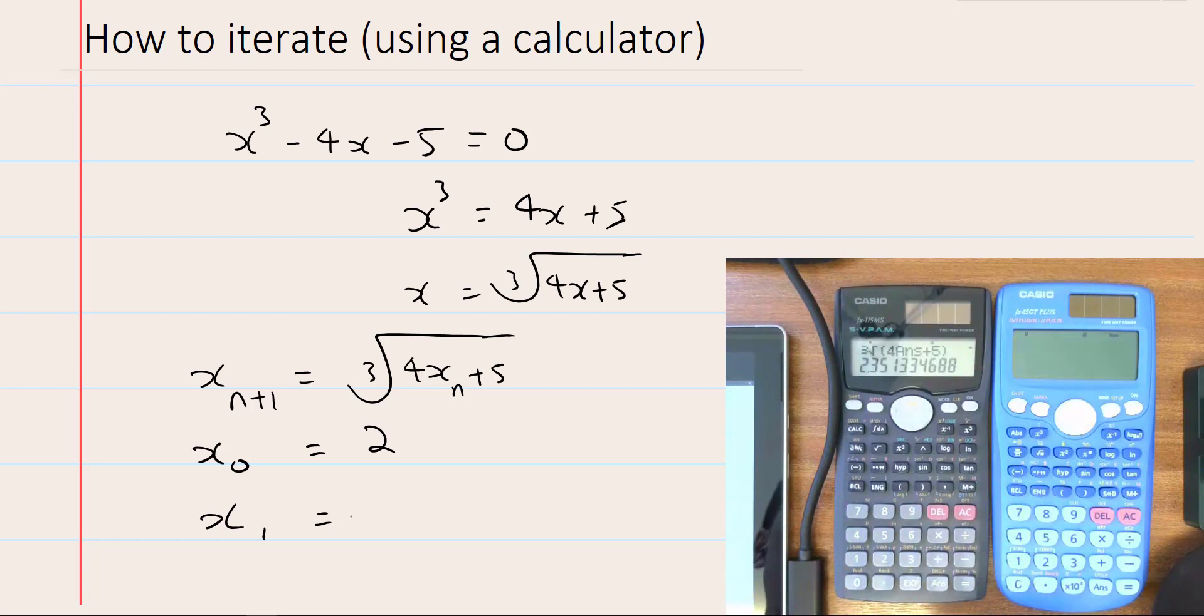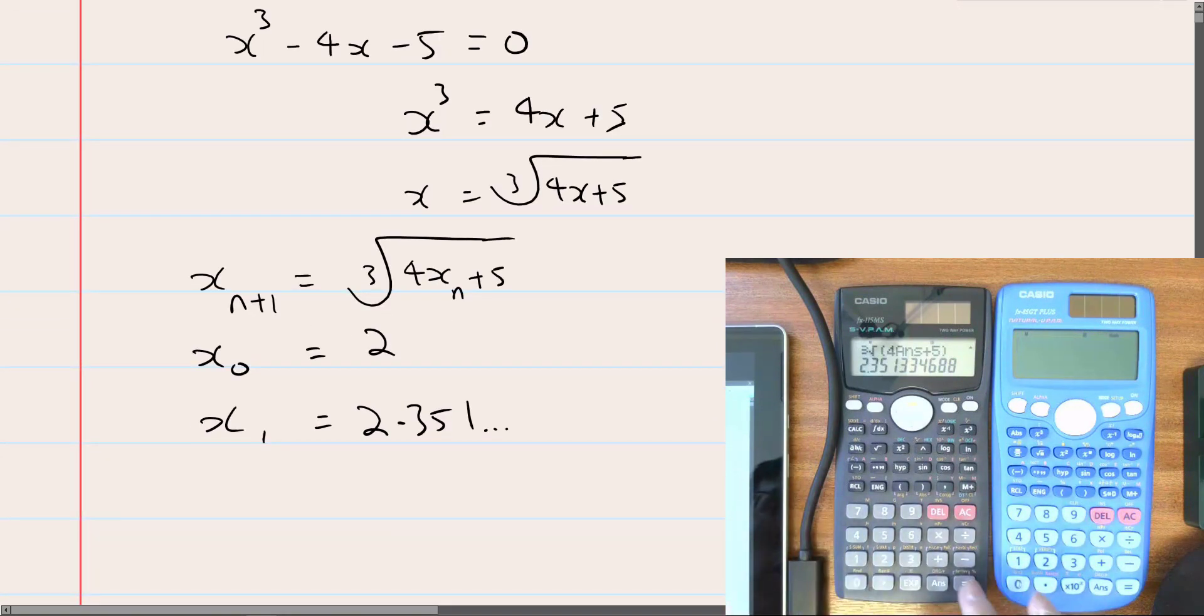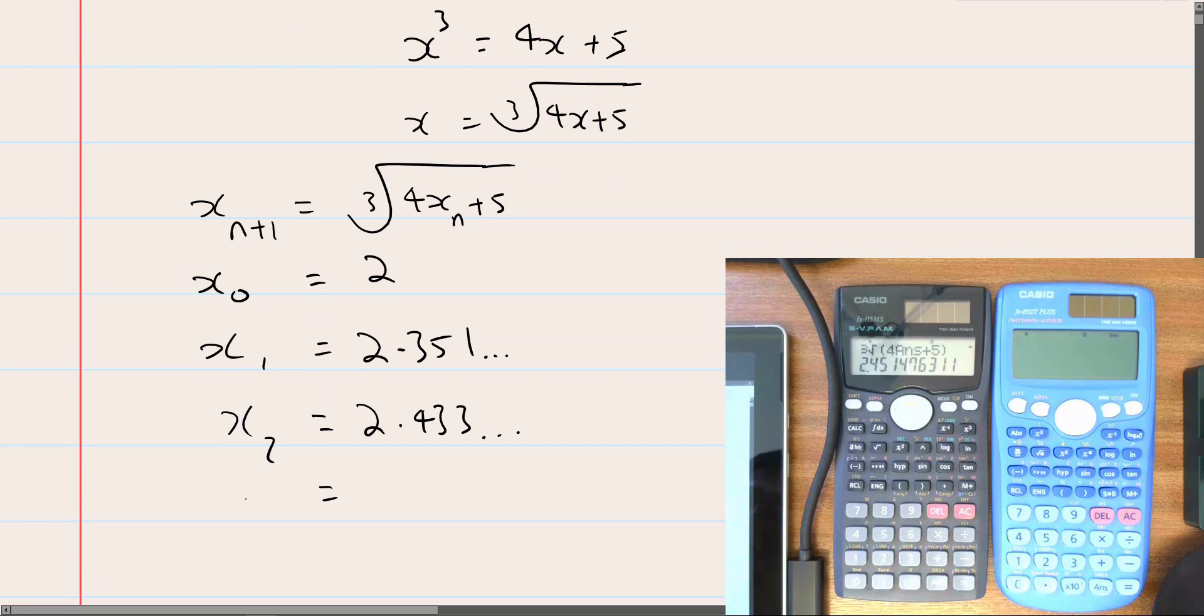Okay, hit that, I'm going to get 2.351 dot dot dot. Hit that again, 2.433 dot dot dot, and so on. And I can just go back.